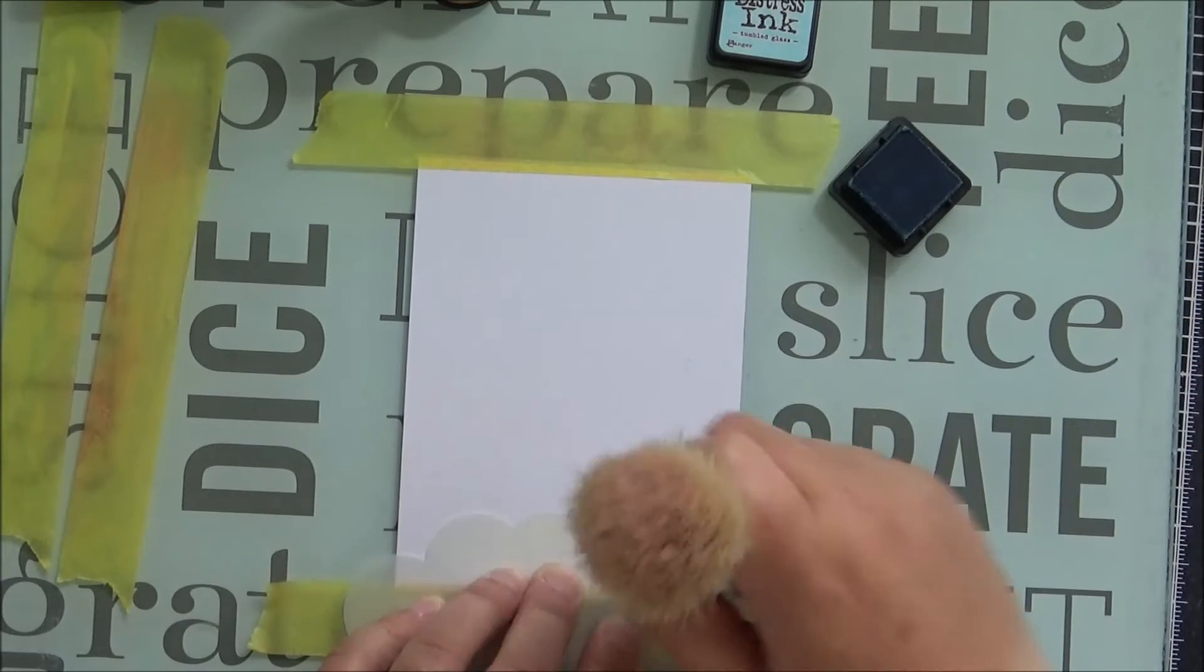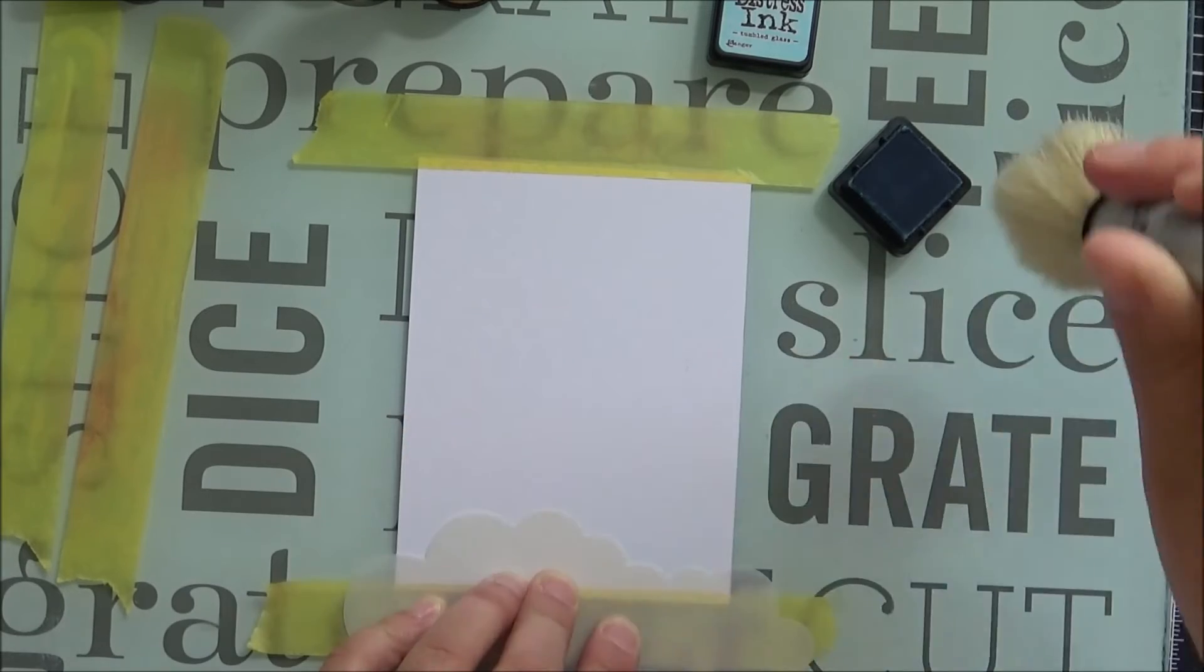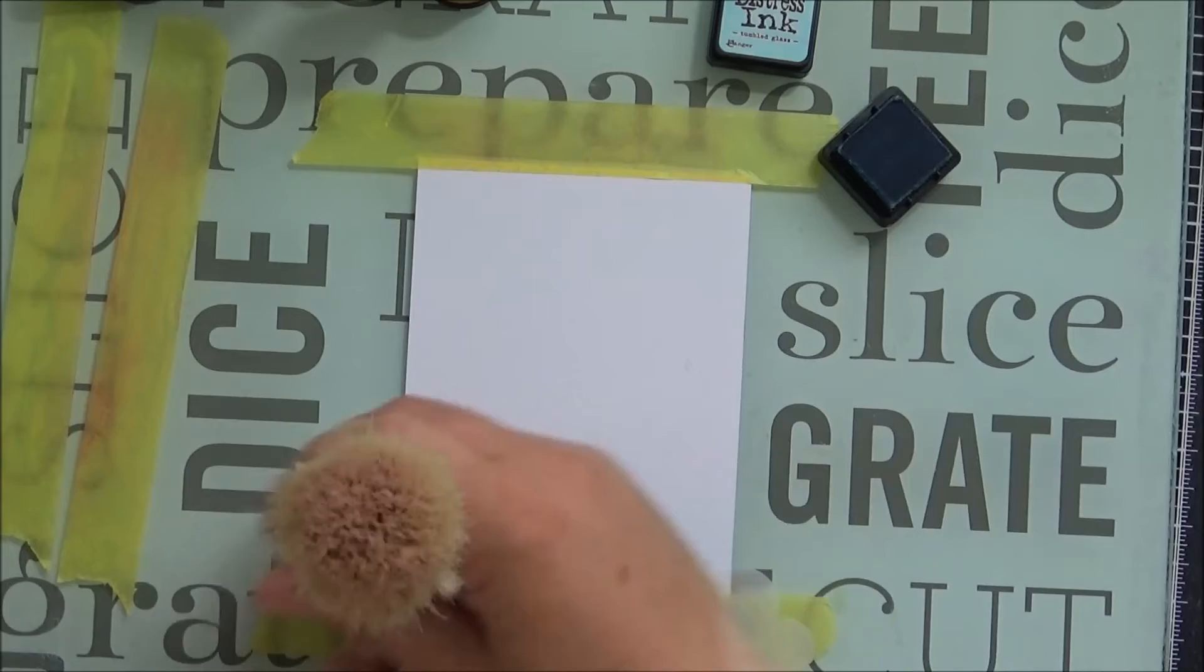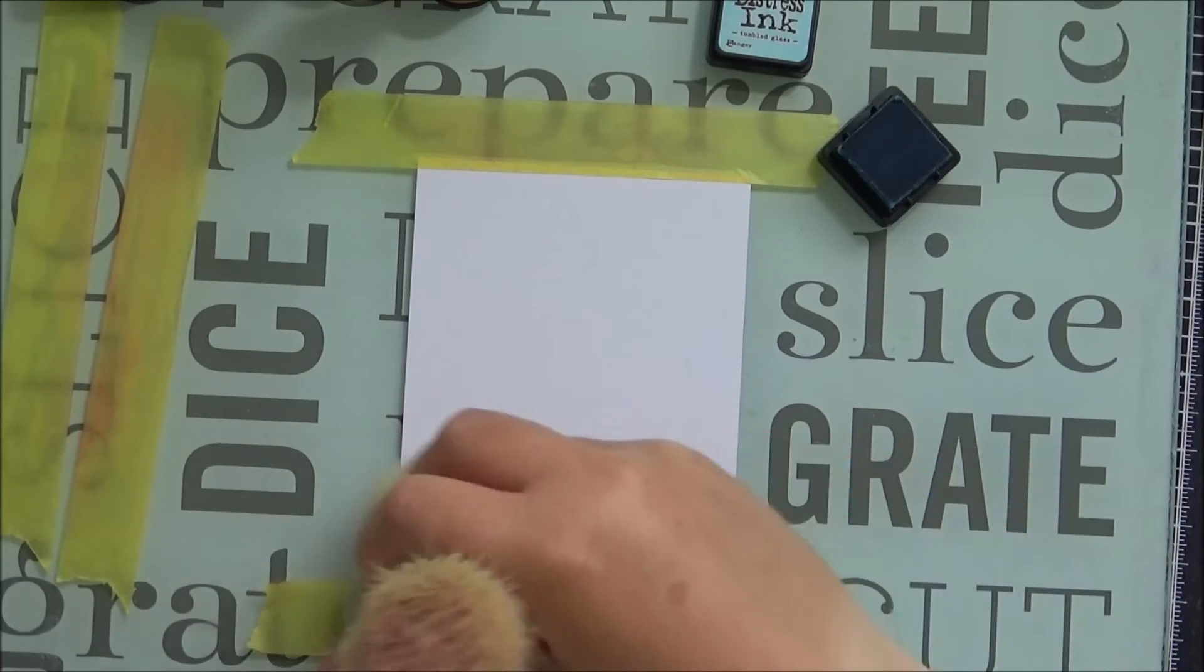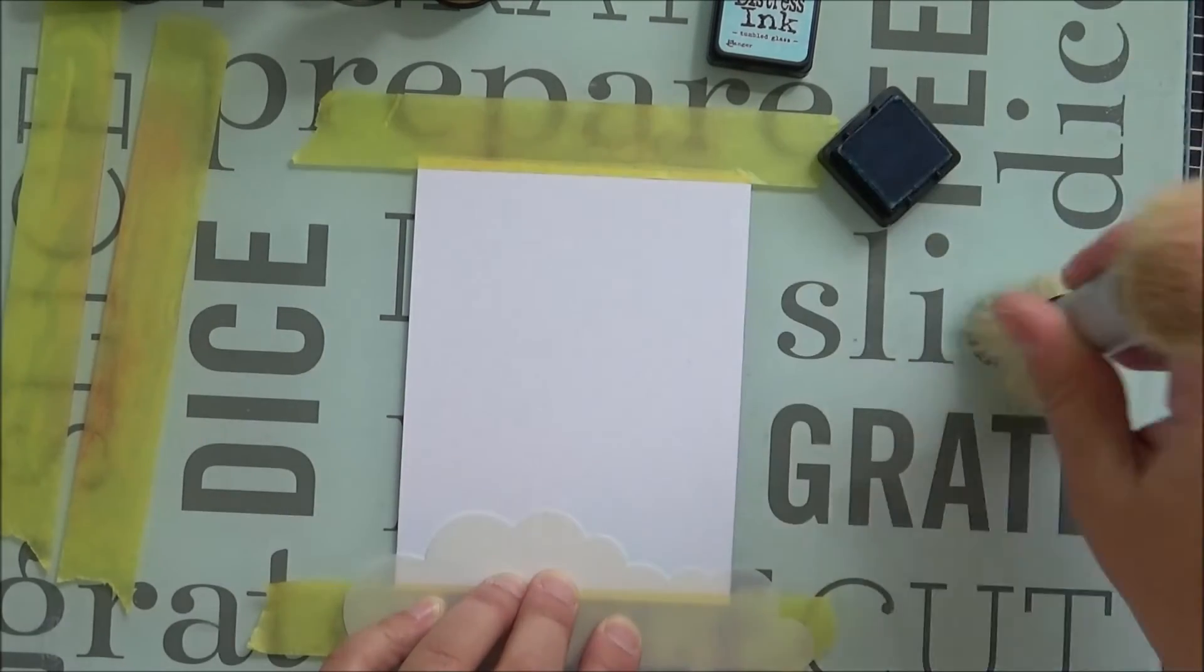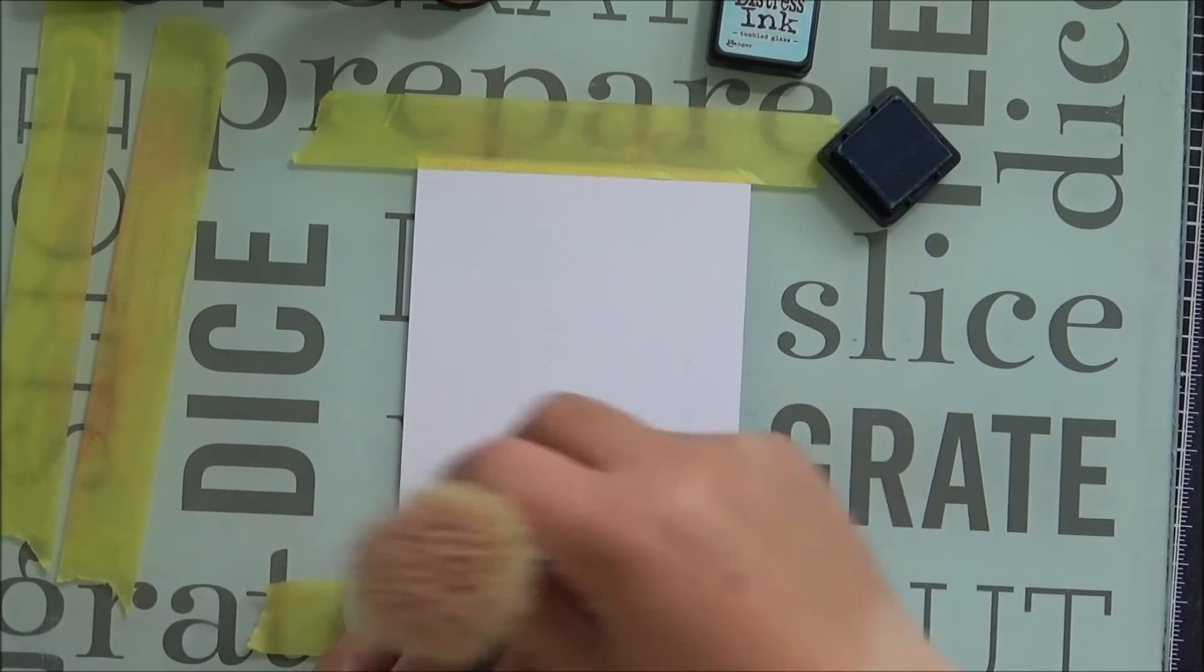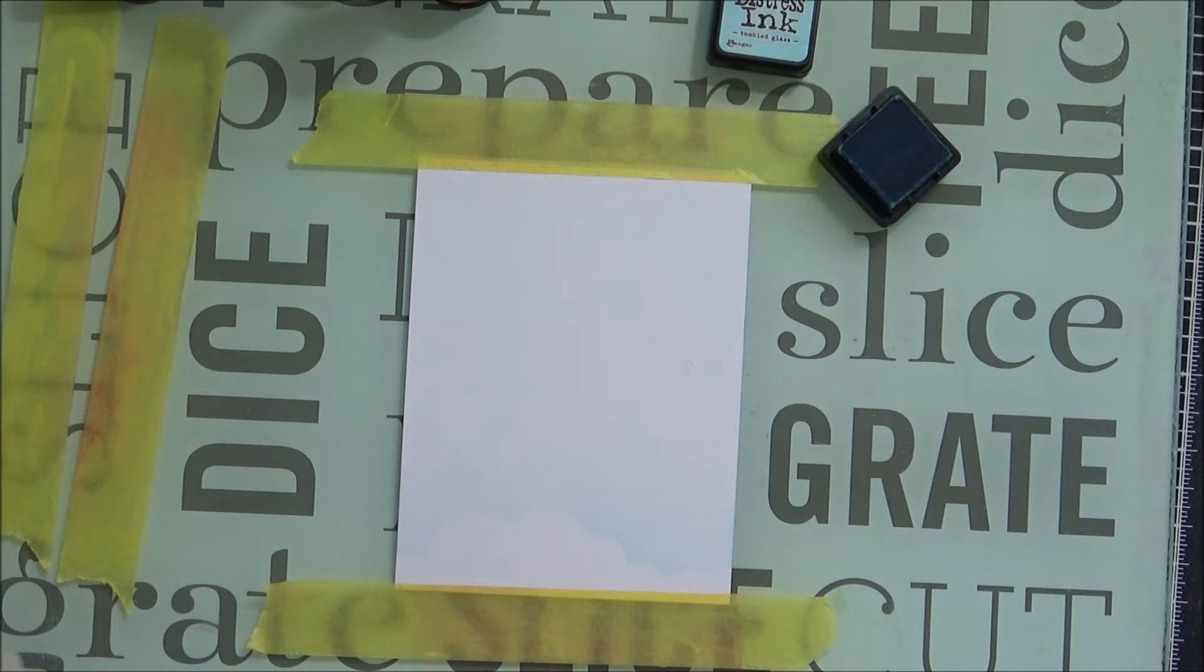You dip it in the ink, you dab it off on your mat, and then you dust. You can see straight off that it's not laying down as much ink. When I remove the stencil it gives a really nice light and soft outline of the cloud.